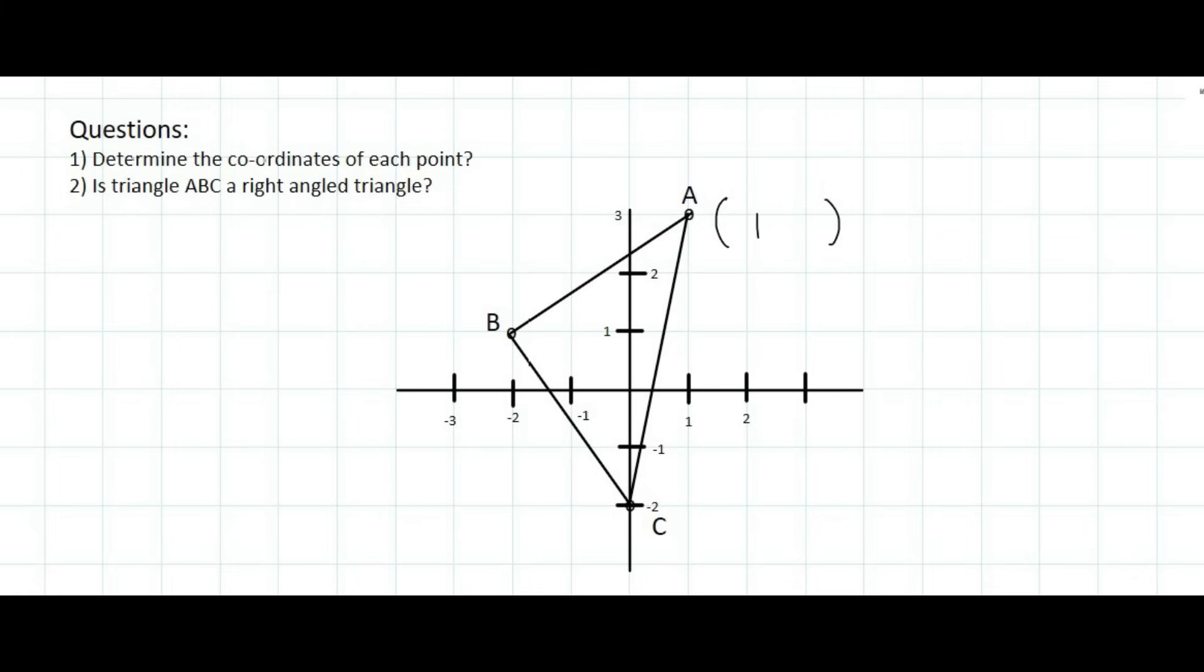Well done if you said it's 1, because remember, x is this line over here, and y is this line over here. Then the y value of point A, well, that's equal to 3. So A is 1 and 3.